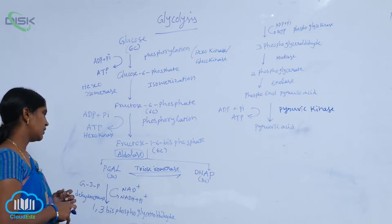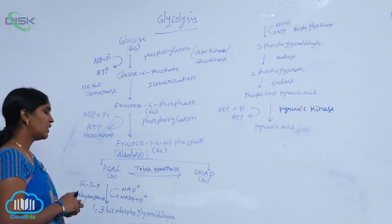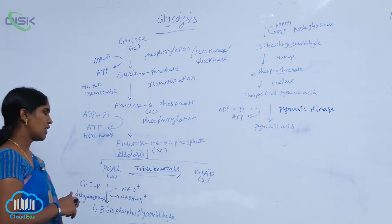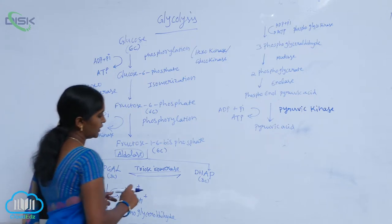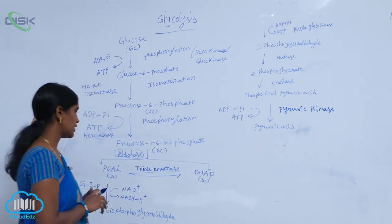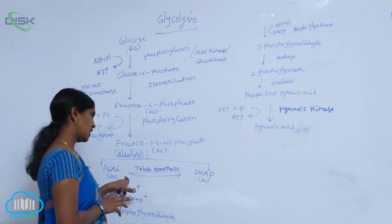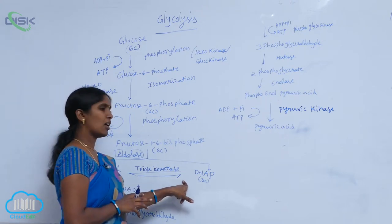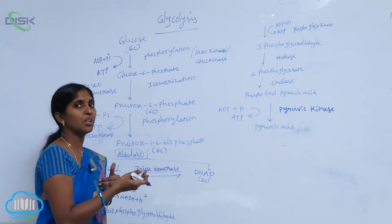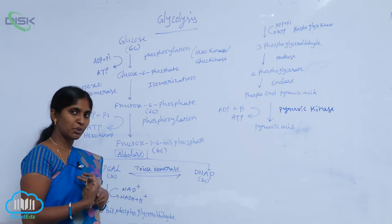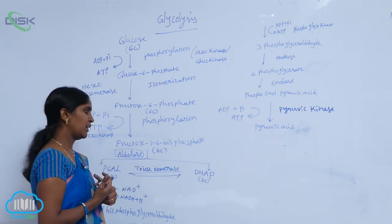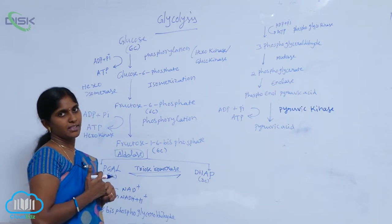Phosphoglyceraldehyde, or glyceraldehyde-3-phosphate, is an isomer with DHAP — dihydroxyacetone phosphate. PGAL and DHAP are isomers, so there is a vice versa conversion between PGAL and DHAP, mediated by the enzyme triose isomerase.